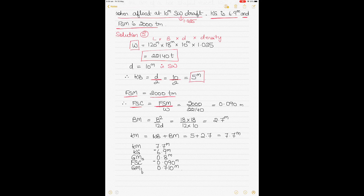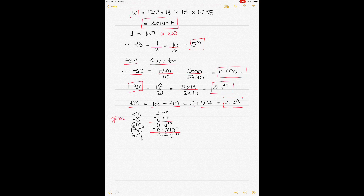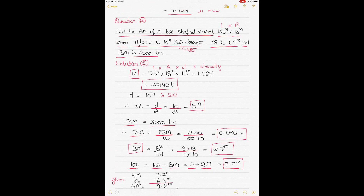BM = B² ÷ 12d: breadth is 18, so 18 × 18 ÷ (12 × draft) = 2.7 meters. KM = KB + BM = 5 + 2.7 = 7.7 meters. KG is given as 6.9 meters, so GM solid = KM − KG = 0.8 meters. Free surface correction is always negative — it reduces GM. Final GM fluid = GM solid − FSC = 0.710 meters.